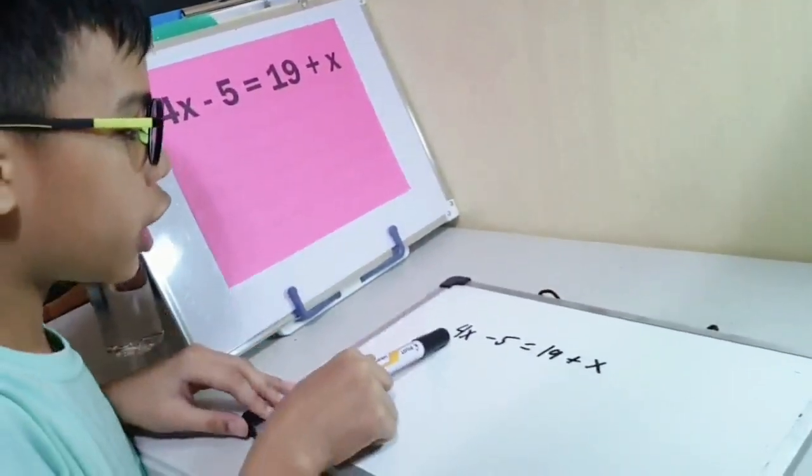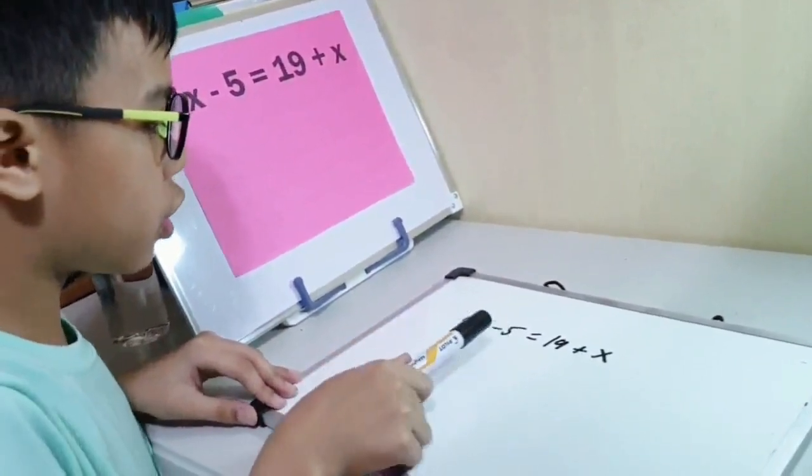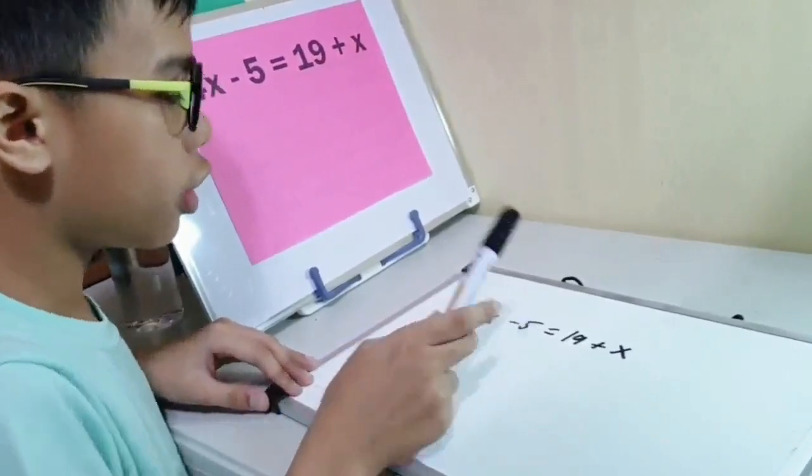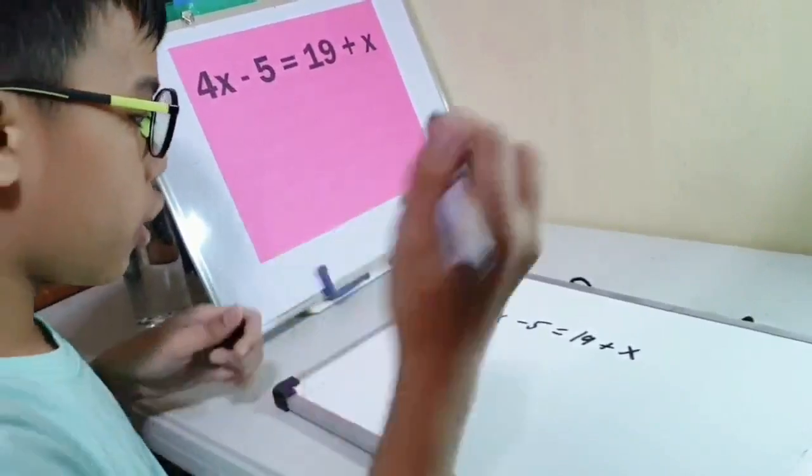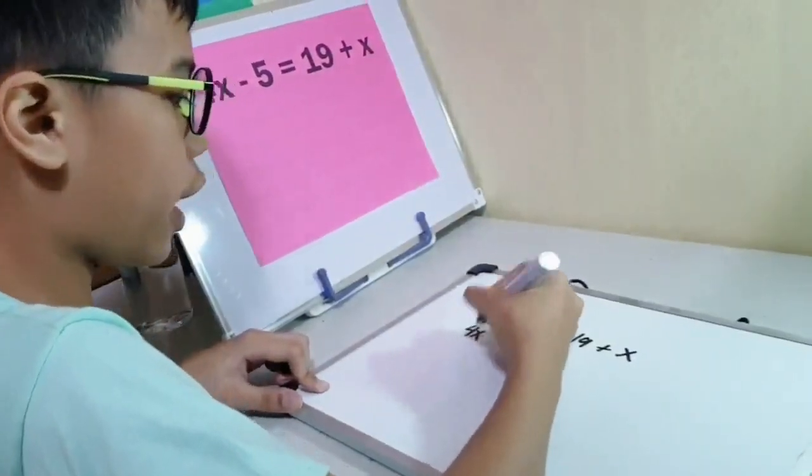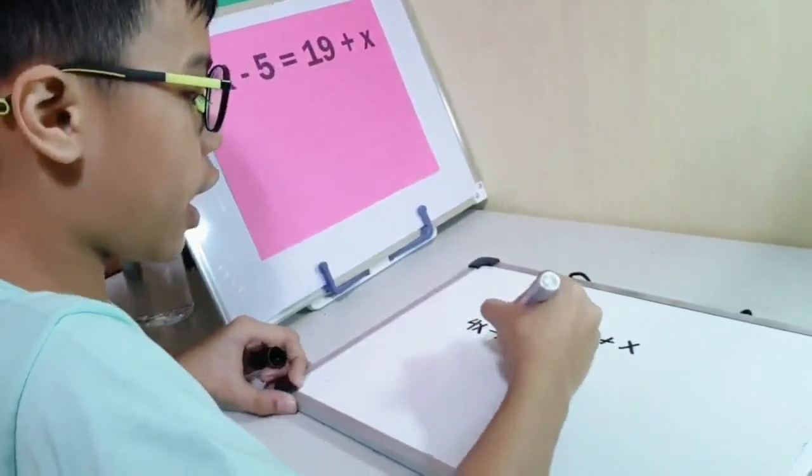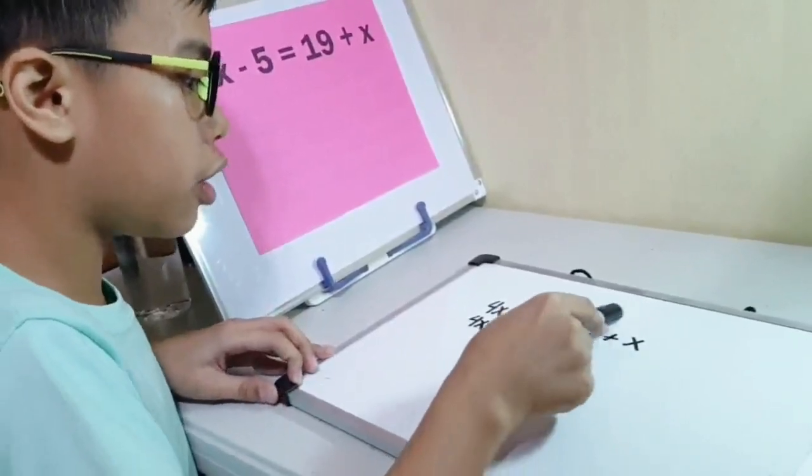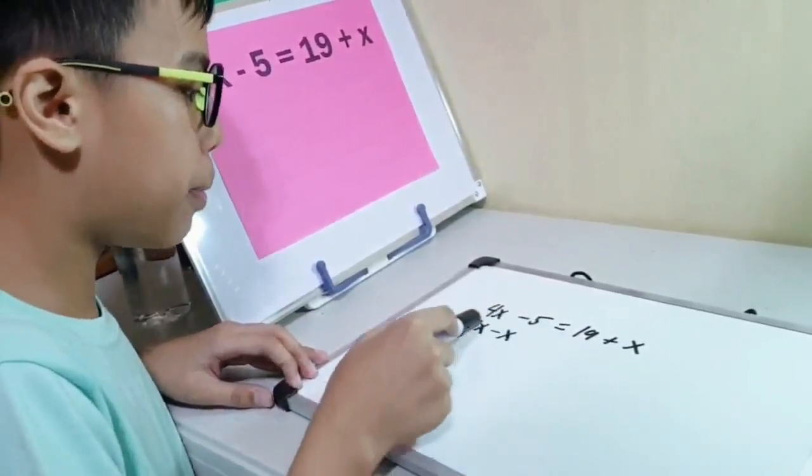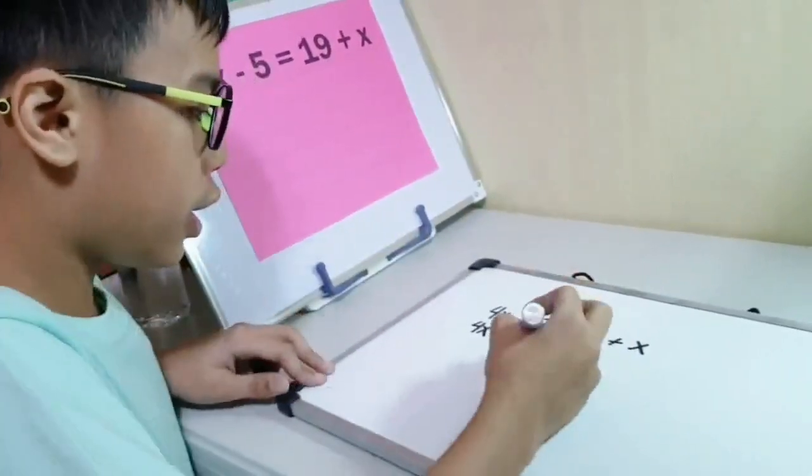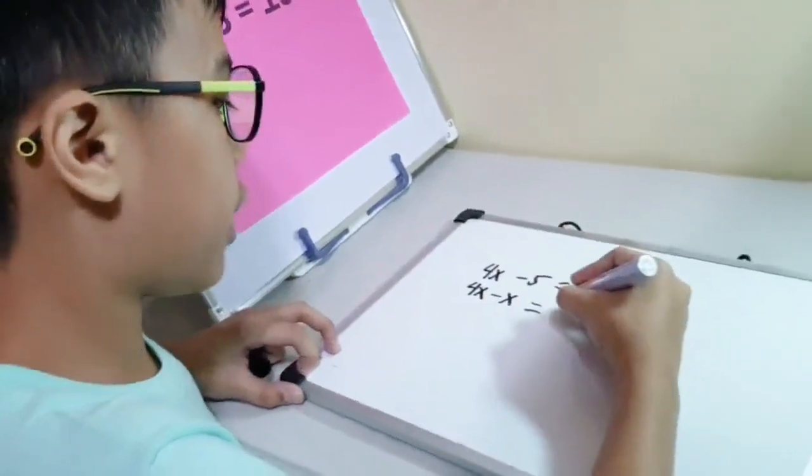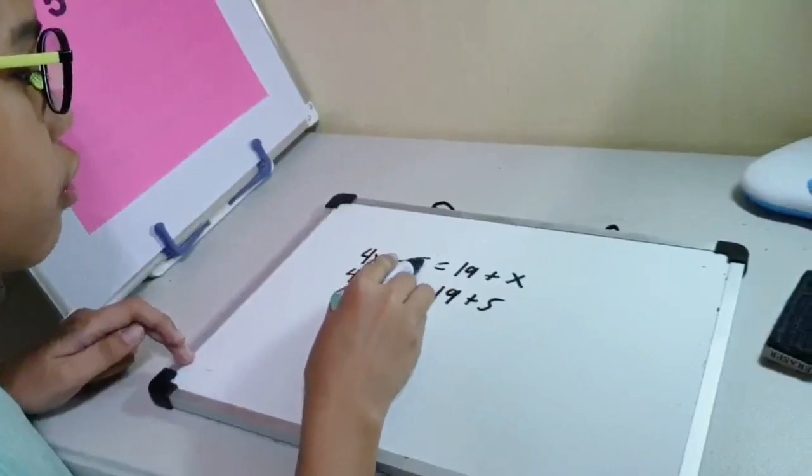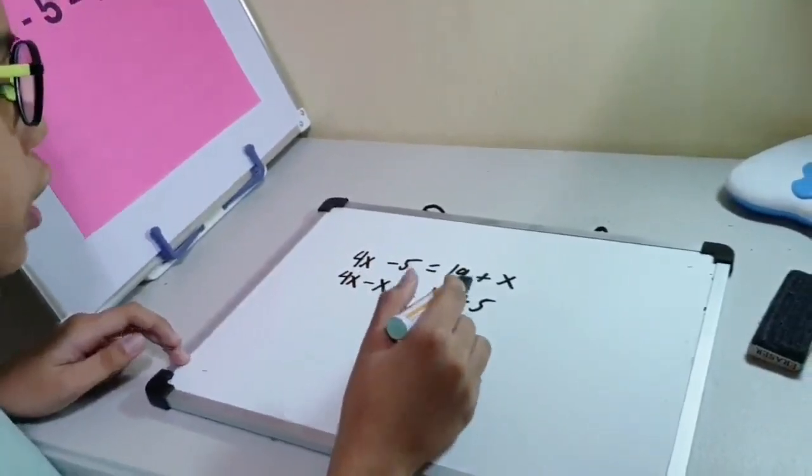You cannot add 4X and 5 because 4X has a variable which is X and 5 doesn't have. So in this case, we transpose. We're gonna add 4X minus X, and as you can see, the plus sign crossed the equal sign, so it became a minus sign. Then equals. Then 19 plus 5. And again, the minus sign crossed the equal sign, so it became a plus sign.